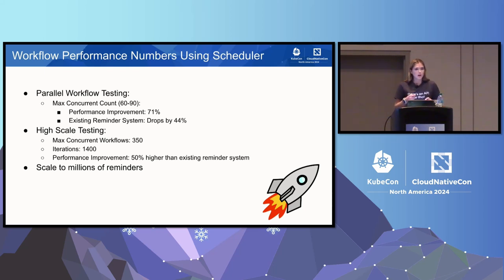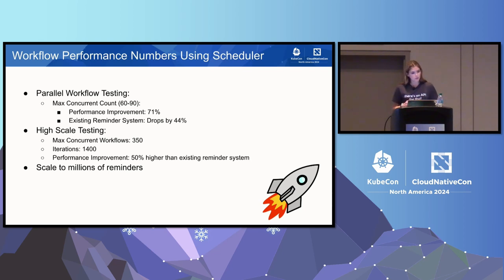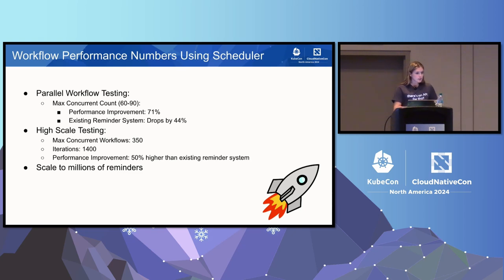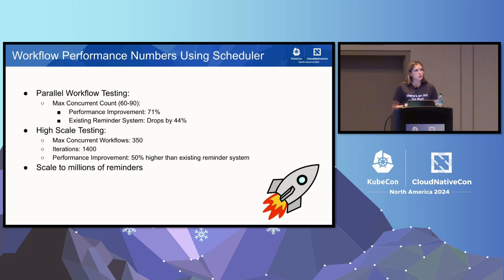Workflow performance numbers — from running performance tests daily: we have a test running parallel workflows with a max concurrent count of 60 to 90 workflows. We saw performance improvements that were 71% higher versus the old reminder system, which would drop by 44% — it just couldn't handle the load. In a high-scale test with a max concurrent workflow count of 350 and 1,400 iterations, we saw performance improvements 50% higher than the old reminder system. We can scale to millions of reminders and jobs in the scheduler, limited at most by the storage capabilities in etcd, not the throughput.